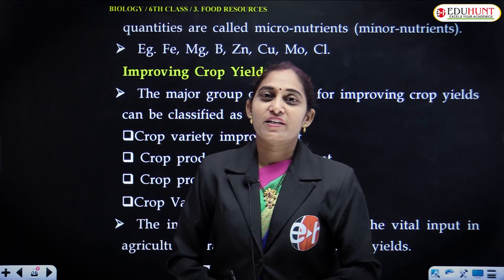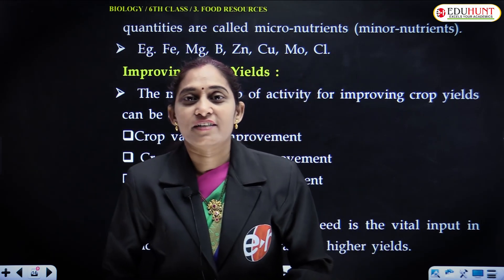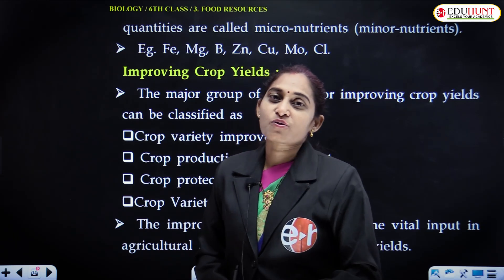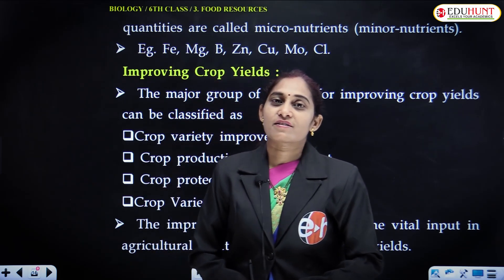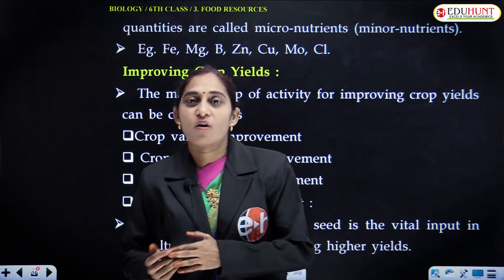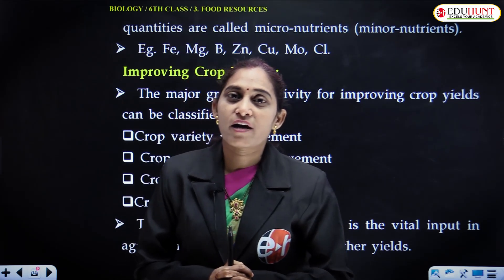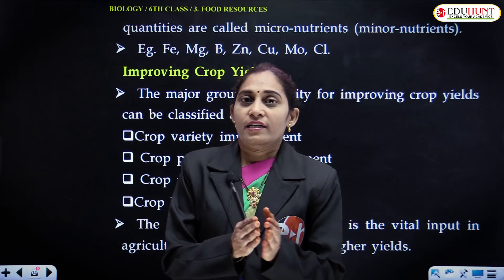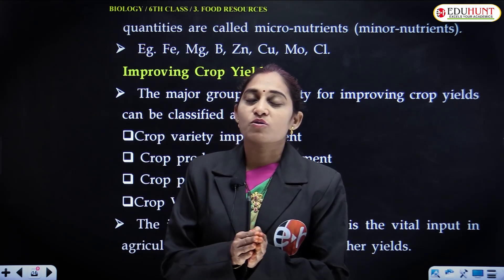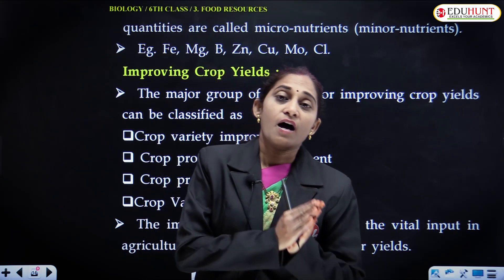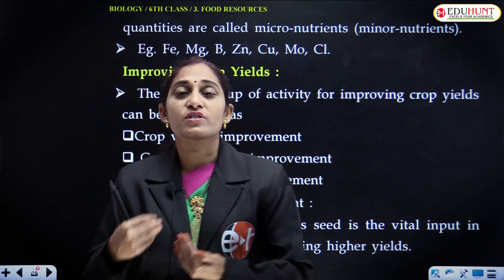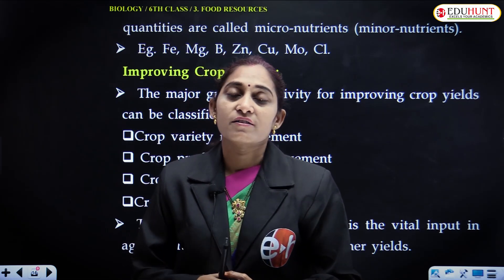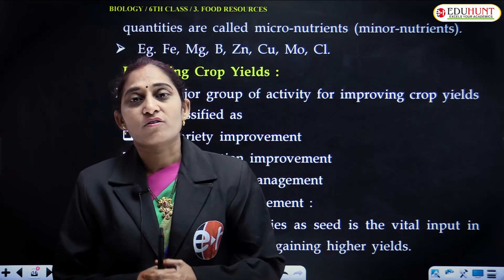Hello dear students, welcome to EduHunt video lecture series. We have finished the first and second chapters and now we are in the third chapter, that is food resources. In the previous session we discussed about why food is required for every organism. All living organisms require food for their growth, development, repair and maintenance of the body. We also discussed different categories of organisms based on mode of nutrition, that is autotrophs and heterotrophs, including parasites, symbionts, and saprophytes.